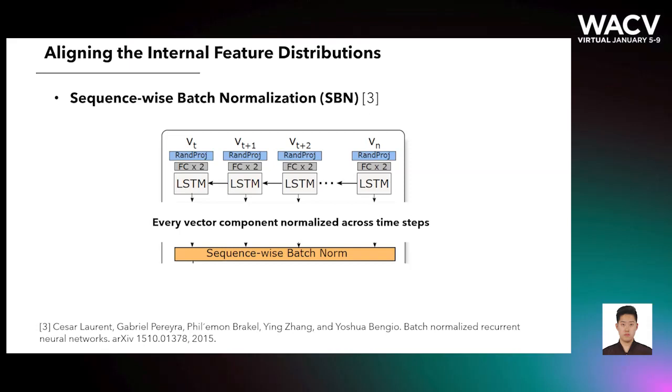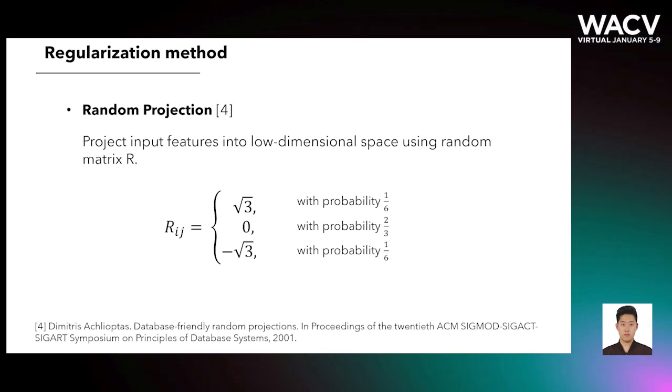Next, we use sequence-wide batch normalization to align the feature distributions. SBN normalizes the tensor across the batch and the temporal dimensions. We also propose a simple but efficient regularization method, random projection, which reduces the input dimensionality and trainable parameters. Random projection alleviates the overfitting issue when the NewMatch network is trained on a small dataset.